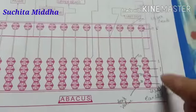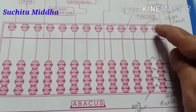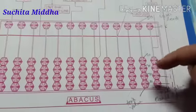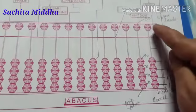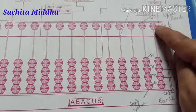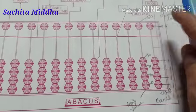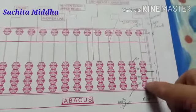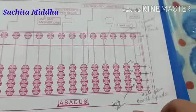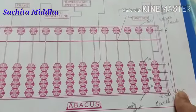This is an abacus scale. This abacus scale is divided into two parts: the upper part and the lower part. The beads at the upper part are known as the heaven beads or upper beads, and the beads at the lower part are known as the earth beads or lower beads.